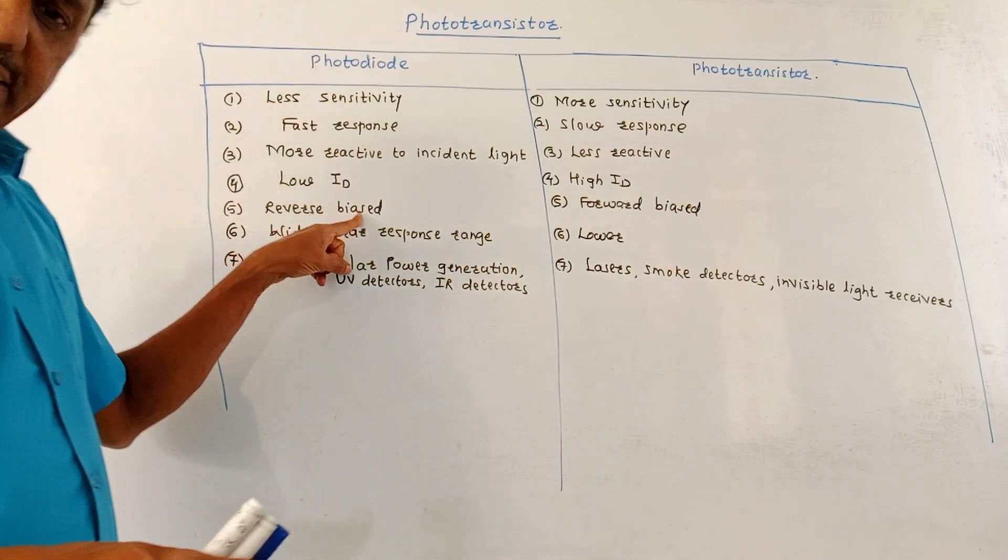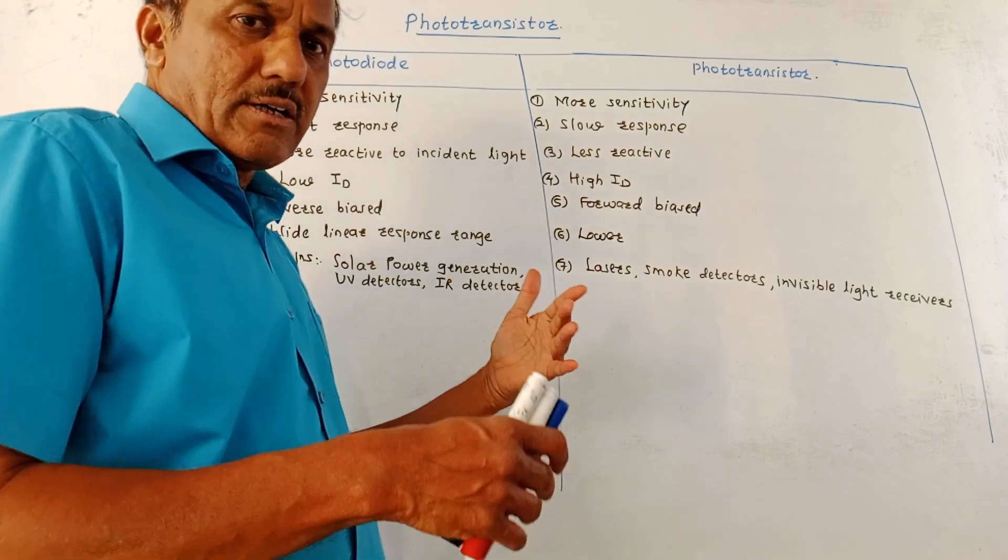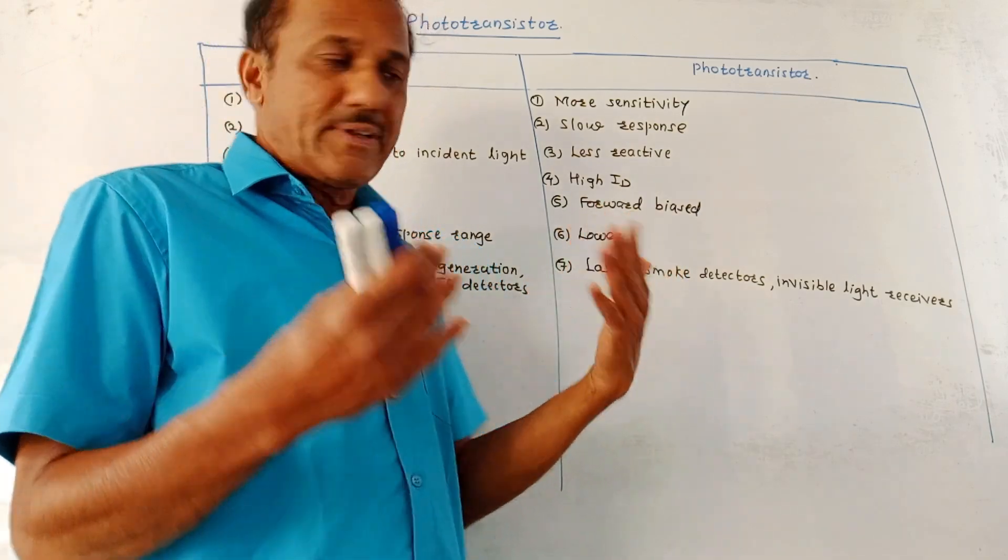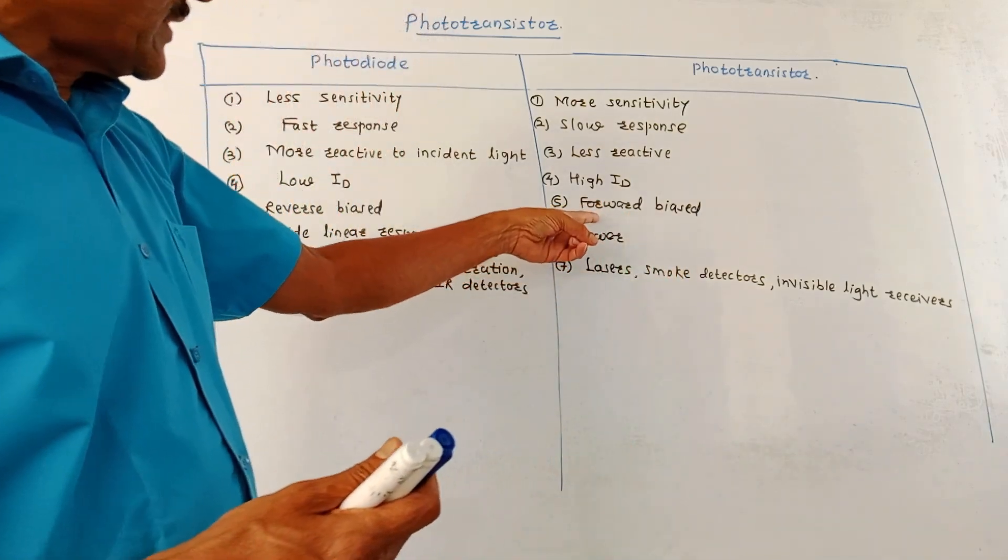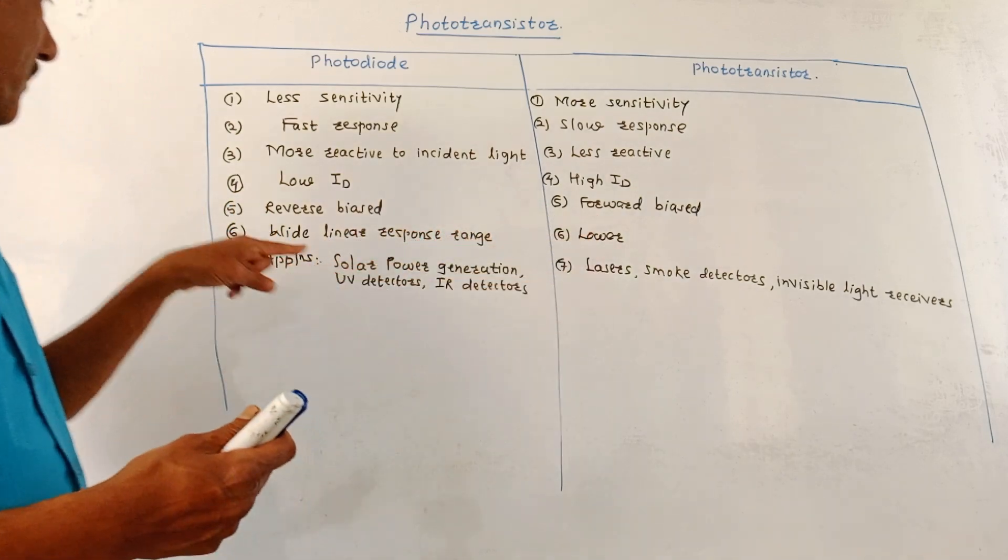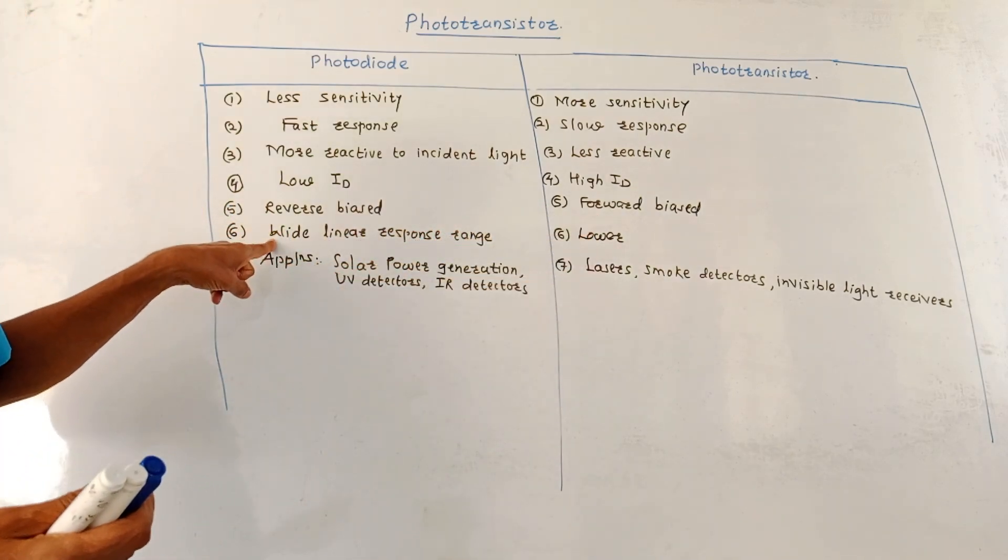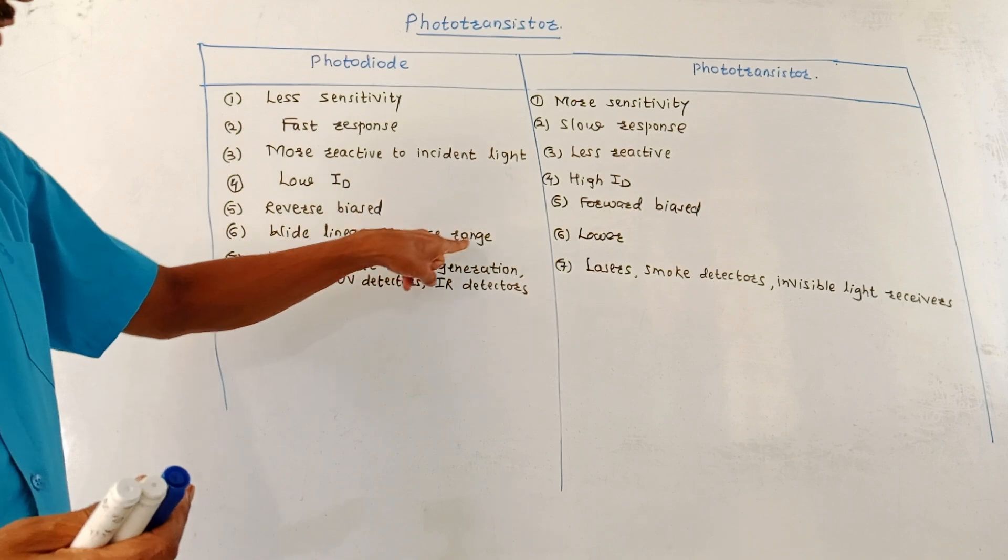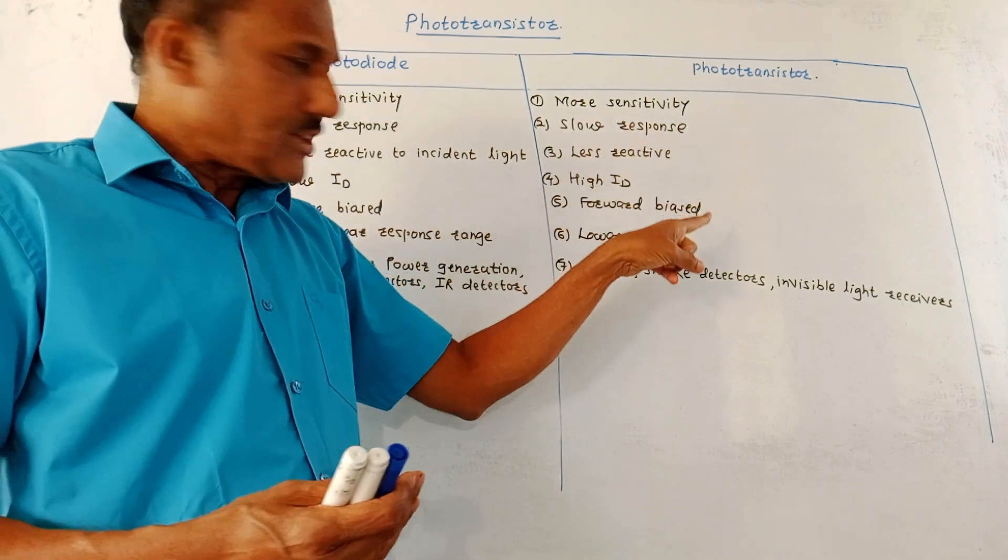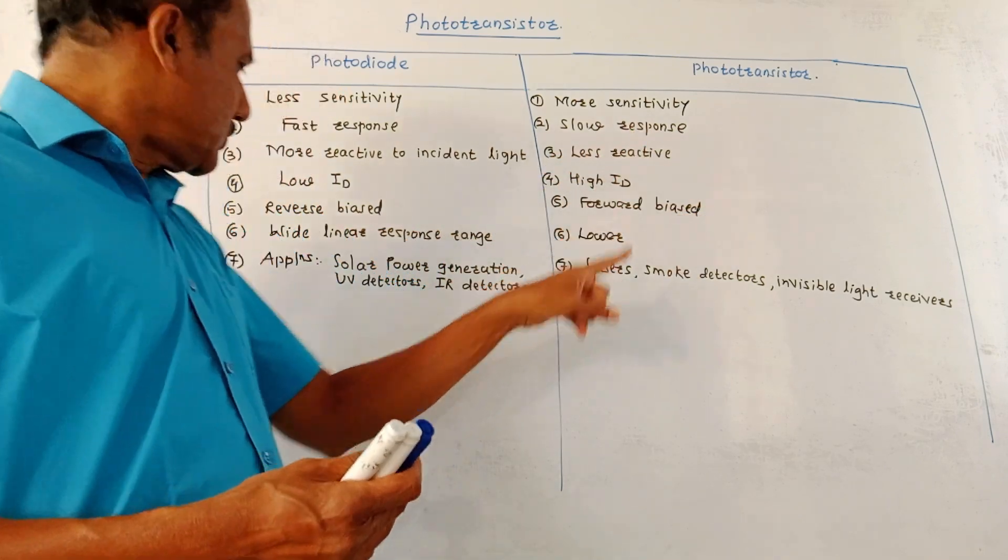Usually, photodiodes are connected in reverse bias. We have discussed while studying the pin photodiode as well as APD. Phototransistors are connected in forward bias mode. Then photodiodes have wide linear response range. Phototransistors have lower linear response range.